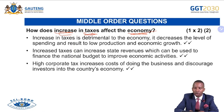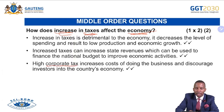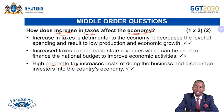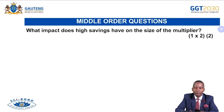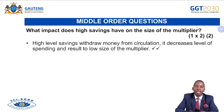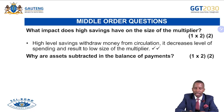Increased taxes can increase state revenues, which can be used to finance the national budget and improve economic activities. However, high corporate tax increases the cost of doing business and discourages investors. That can lead to investors being pessimistic about investing in the country's economy because of too much government intervention. 'What impact does high savings have on the size of the multiplier?' If there are more savings, there will be less spending, so the multiplier will be affected negatively.